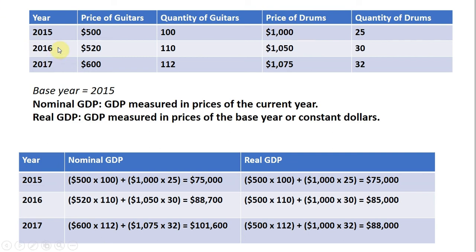We have an economy with two goods. This economy produces guitars and drums. We have the price of guitars for three years and the number of guitars produced in those years, and likewise, we have the same information for drums.